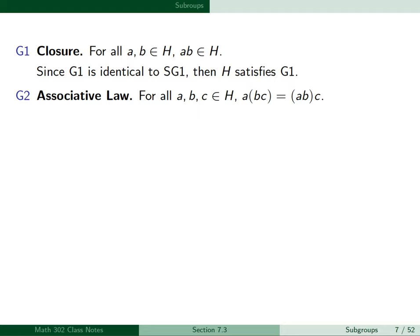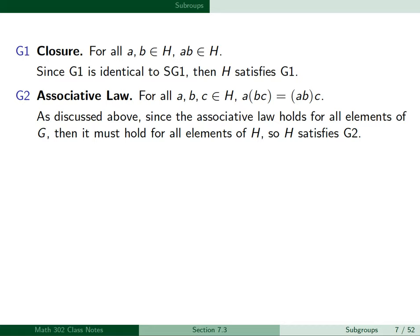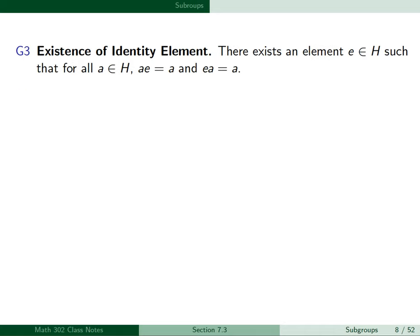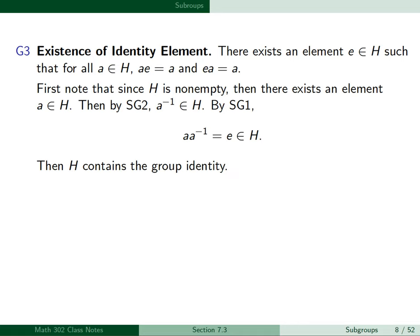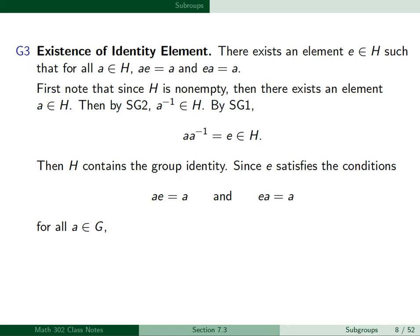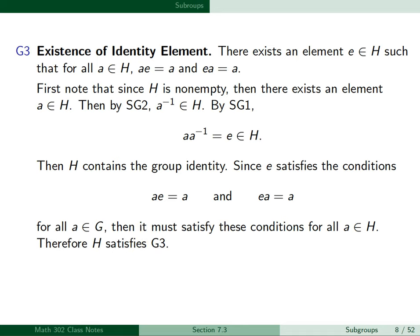G2, the associative law, holds for all elements of G and therefore for all elements of H, so H satisfies G2. For G3, existence of an identity element: since H is non-empty, there exists an element A in H. By SG2, A-inverse belongs to H, and by SG1, A times A-inverse, which is the identity element E, belongs to H. Since E satisfies A times E equals A and E times A equals A for all elements of G, it does so for all elements of H. Therefore, H satisfies G3.